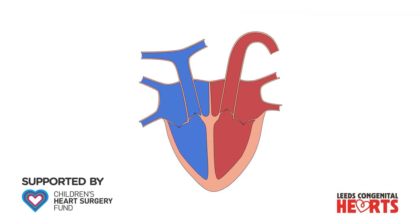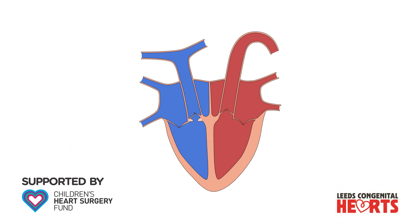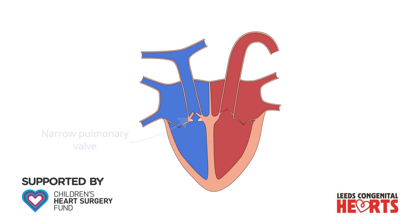The obstruction to blood being pumped to the lungs can occur at different levels. There may be a narrowing within the right ventricle just below the pulmonary valve due to an excess or overgrowth of heart muscle. There may also be an obstruction at the pulmonary valve itself — it may be too small or formed in such a way that it doesn't open very well. The obstruction can also be within the pulmonary artery or its branches, which may be narrow.